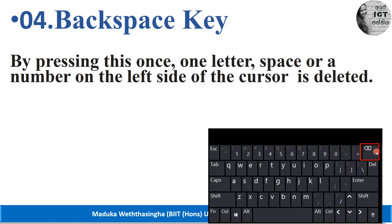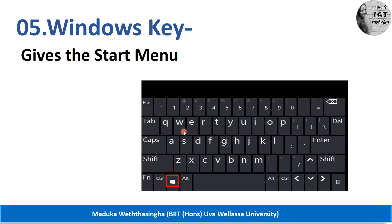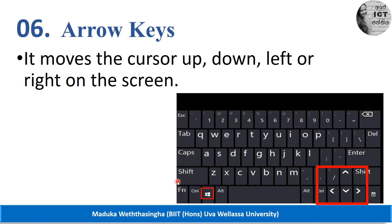Next is the backspace key. Sometimes there is a back arrow on this key. By pressing backspace, one letter, space, or number on the left side of the cursor is deleted. So the letters, numbers, and spaces that are to the left of the cursor can be deleted. Next is the Windows key — by pressing the Windows key we can open the start menu.